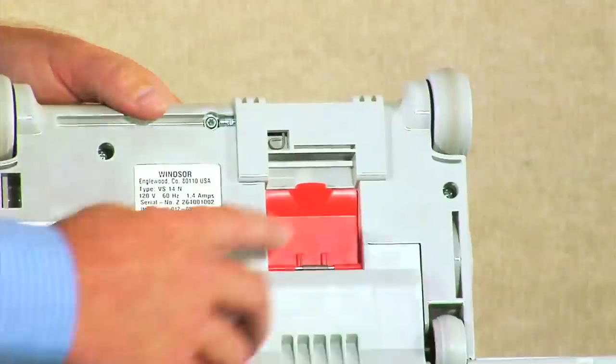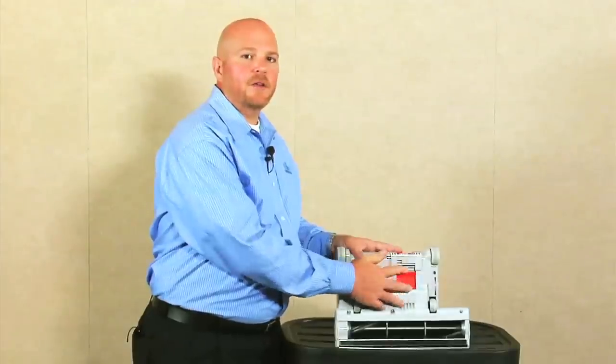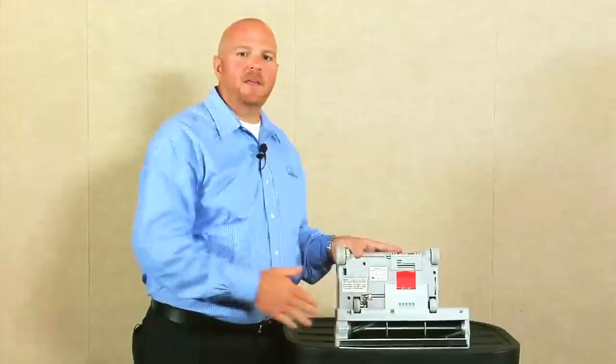Finally we've added an access door similar to the access door on the sensors. This allows you to clean out debris that might build up in the neck of the vacuum.